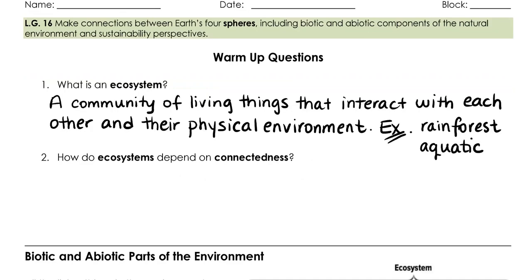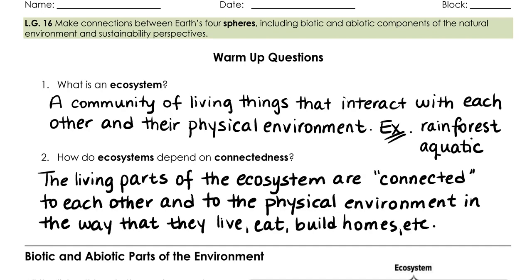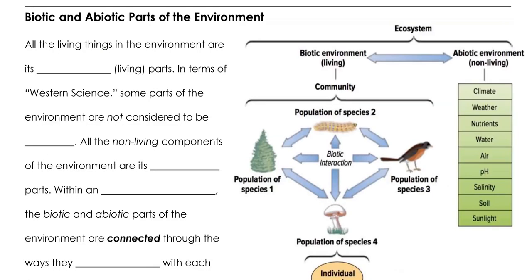So how do ecosystems depend on connectedness? The living parts of an ecosystem are connected to each other and to the physical environment in the way that these organisms live, eat, build homes, etc. The classification of the environment into living and nonliving things is one of the most important distinctions in ecology.